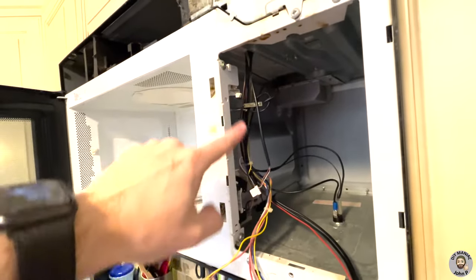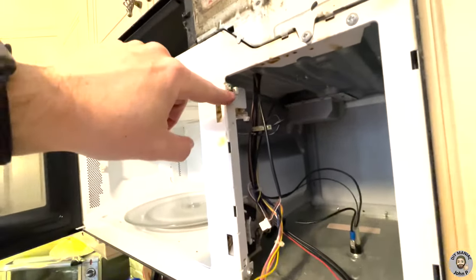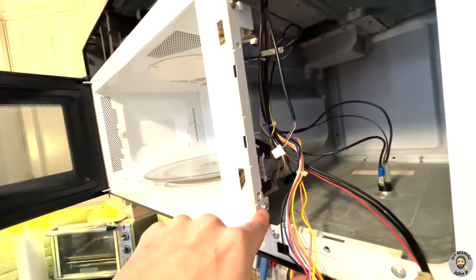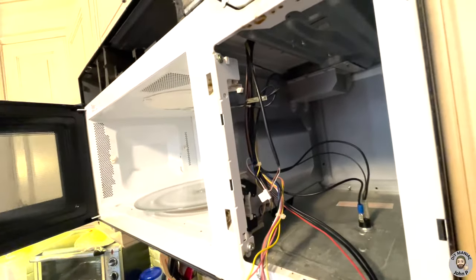We're going to go ahead and remove that switch assembly, so it's a whole bracket that holds those three switches, and it's removed by removing these two Phillips screws, one on top and one on the bottom, and that allows us to remove that switch assembly.